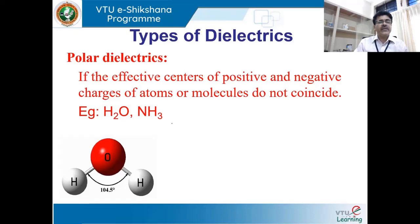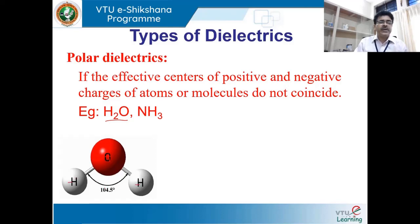A simple example is water, H₂O. Oxygen is bonded with two hydrogen atoms. If we take the effective center of oxygen at the center and the effective center of the two hydrogens, these two centers do not overlap. There is a certain amount of dipole moment, which is not equal to zero. Therefore, water is a polar dielectric molecule.